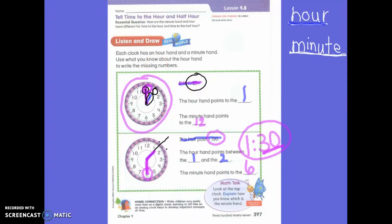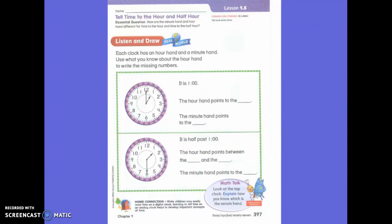So those are the two things we need to remember today. When I see my minute hand pointing to my six, I say thirty. That means it is half past. Does everyone understand?